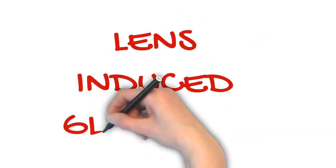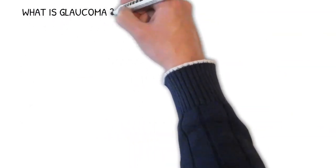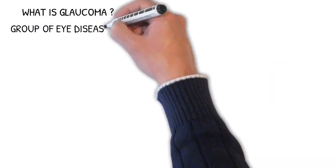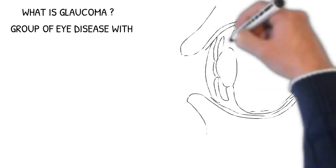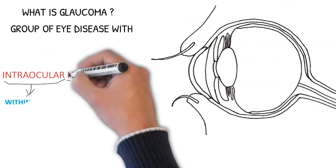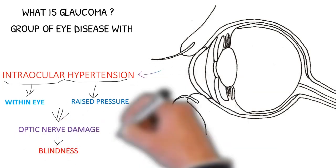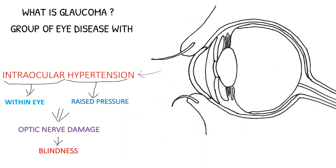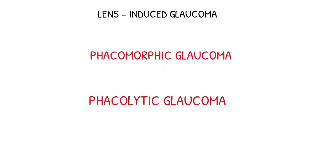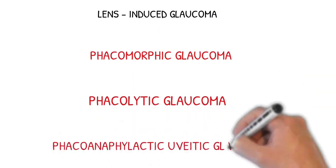Lens-induced glaucoma. So what is glaucoma? Glaucoma is a group of eye diseases with intraocular hypertension which leads to optic nerve damage. If untreated, it leads to blindness. Lens-induced glaucoma has three types: phacomorphic, phacolytic, and phacoanaphylactic uveitic glaucoma.